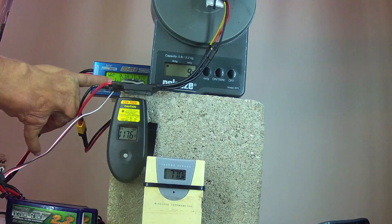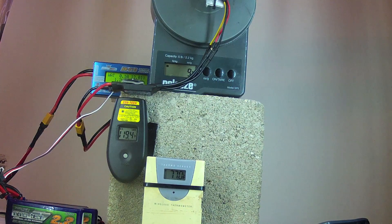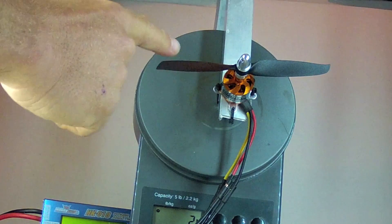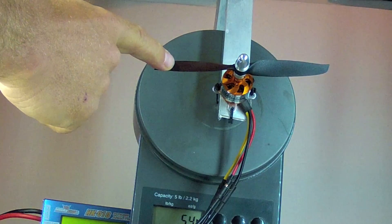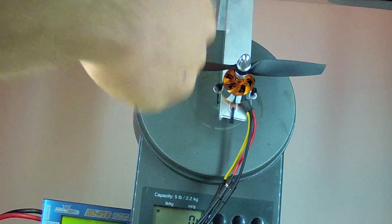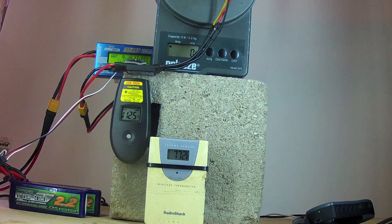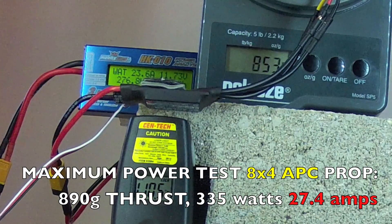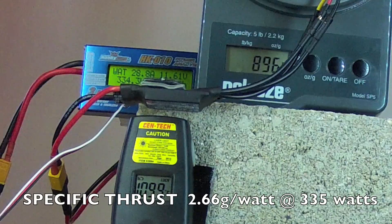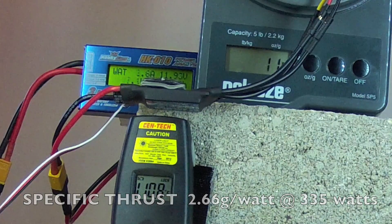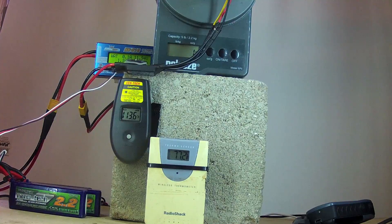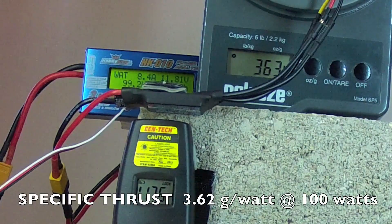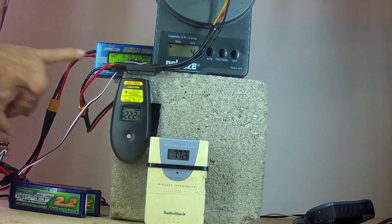So at 100 watts power draw, it was generating about 380 grams of thrust, a little bit more than the 6x4 prop. This one is an APC style, though not an APC brand, slightly swept tip 6x4 prop. Maximum thrust test. About 900 grams. And then we'll do the 100 watt thrust test.